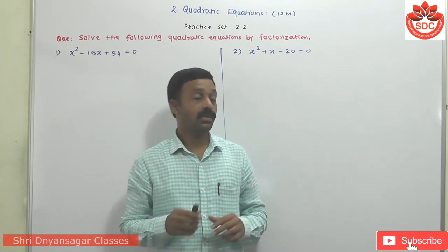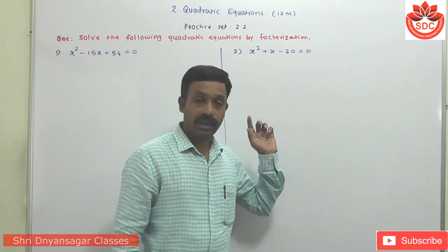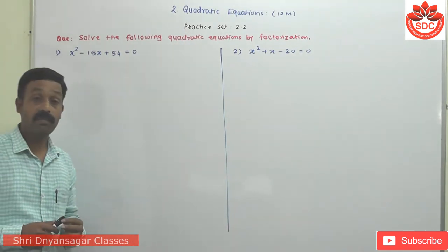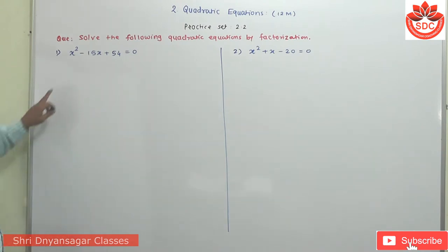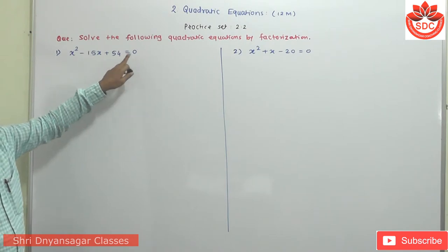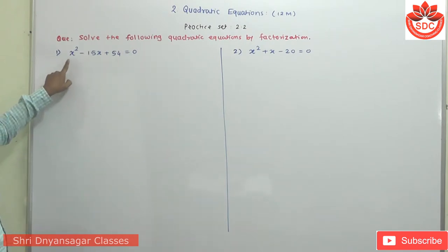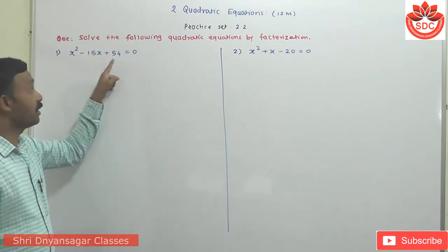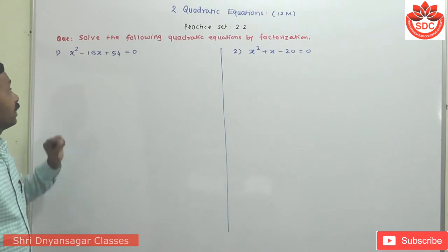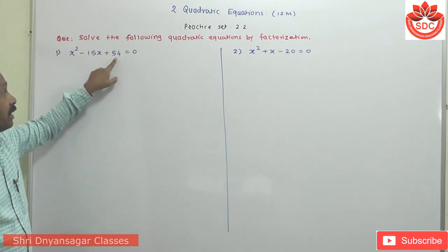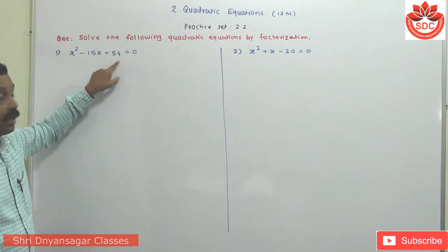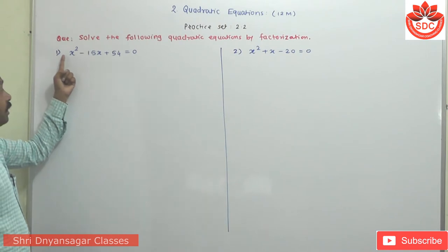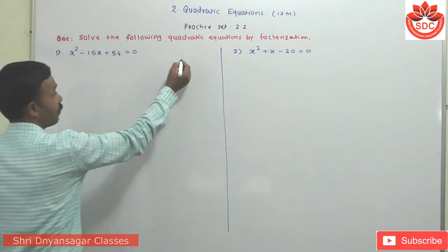Now let's take some examples. Practice point 2, first question: solve the following quadratic equations by factorization method. First question is X² - 15X + 54 = 0. This given equation is already in standard form AX² + BX + C = 0. Comparing, A = 1, B = -15, and C = 54. Now we have to find the product of A and C: 1 × 54 = 54.